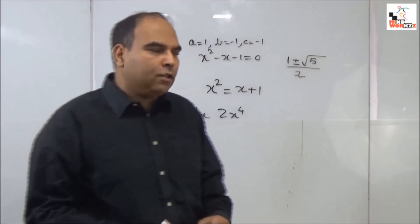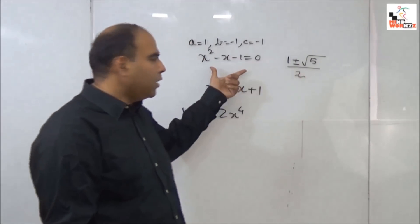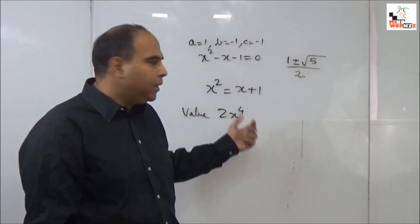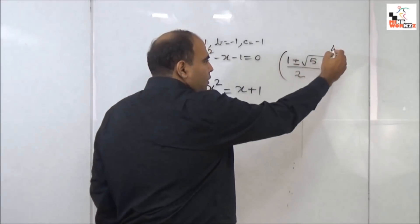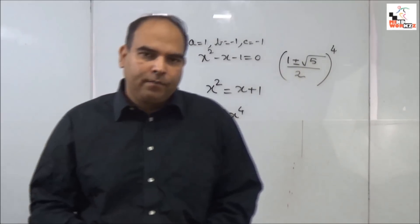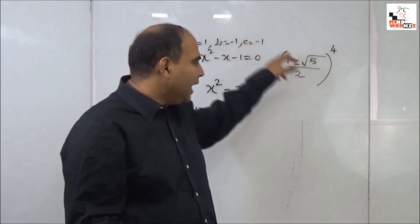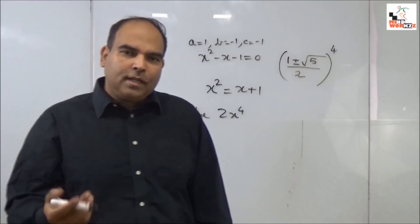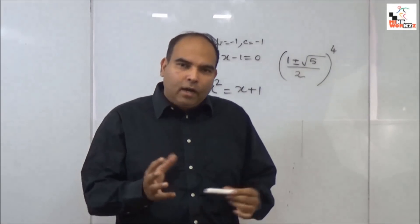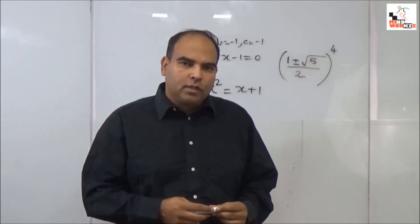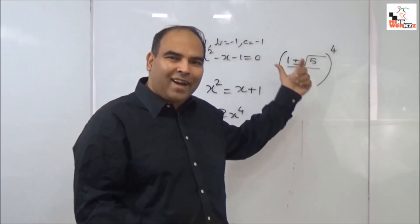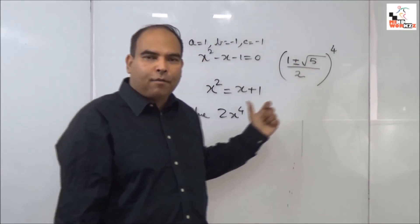That's the problem in this question. Once you get this as the value of x from this quadratic equation, you have to find the value of 2x⁴, which means you need to raise this to the power 4 to get x⁴ and then multiply by 2, which is going to be quite complicated, not to talk about the time you would have taken to get to this point by itself.